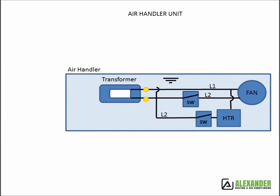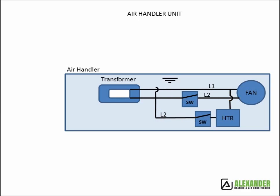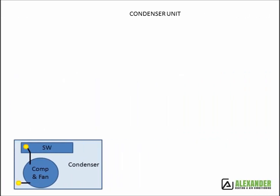High voltage in your air handler powers the indoor fan, the heater, and creates the low voltage power source through the transformer. High voltage in the condenser runs the outside fan and the Freon compressor.